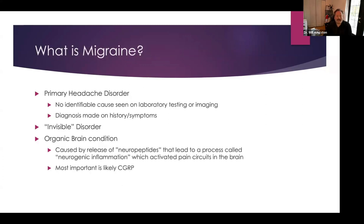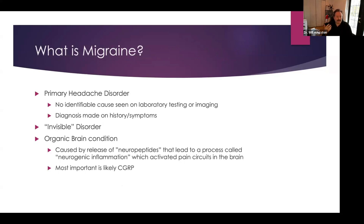So what is migraine? There's a lot of fallacies out there about what migraine is not, but what migraine is, is what we call a primary headache disorder. A primary headache disorder means the type of disorder where we can't see an identifiable cause, either on laboratory testing like blood tests, or imaging tests like MRI or CAT scans. The way we make a diagnosis of migraine is based on the history that someone is able to provide us, and based on the symptoms that someone is able to report. So our confidence in our ability to diagnose someone is reliant on how someone is able to communicate their symptoms to us.